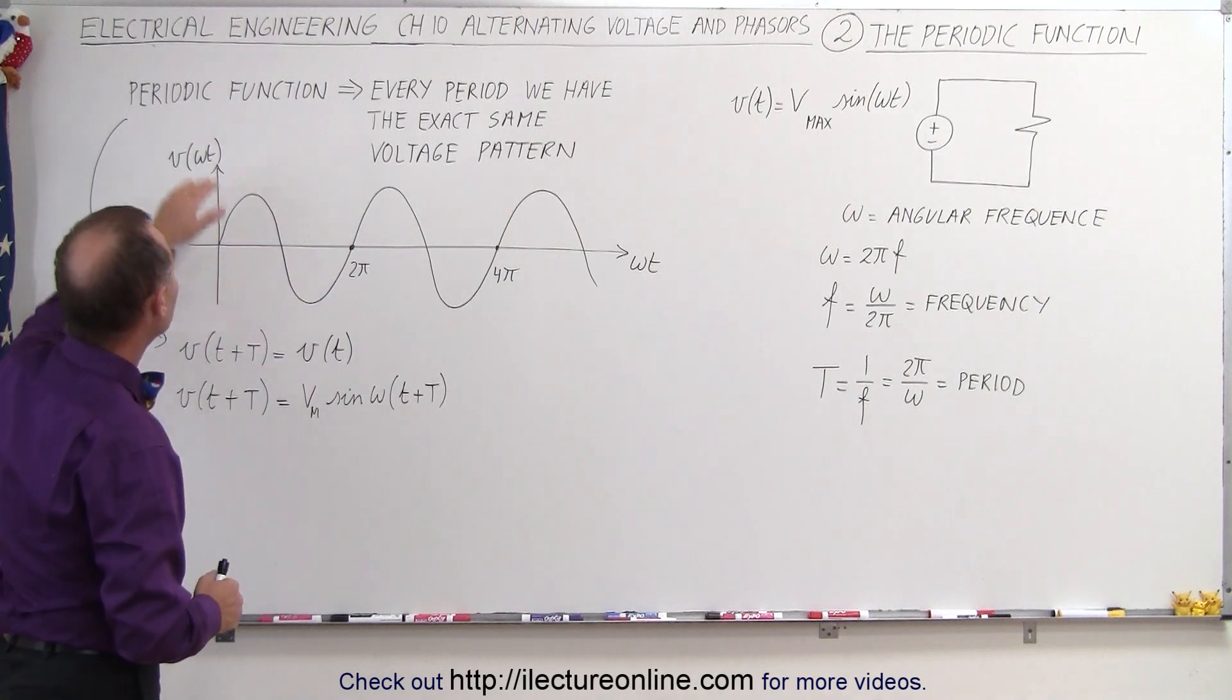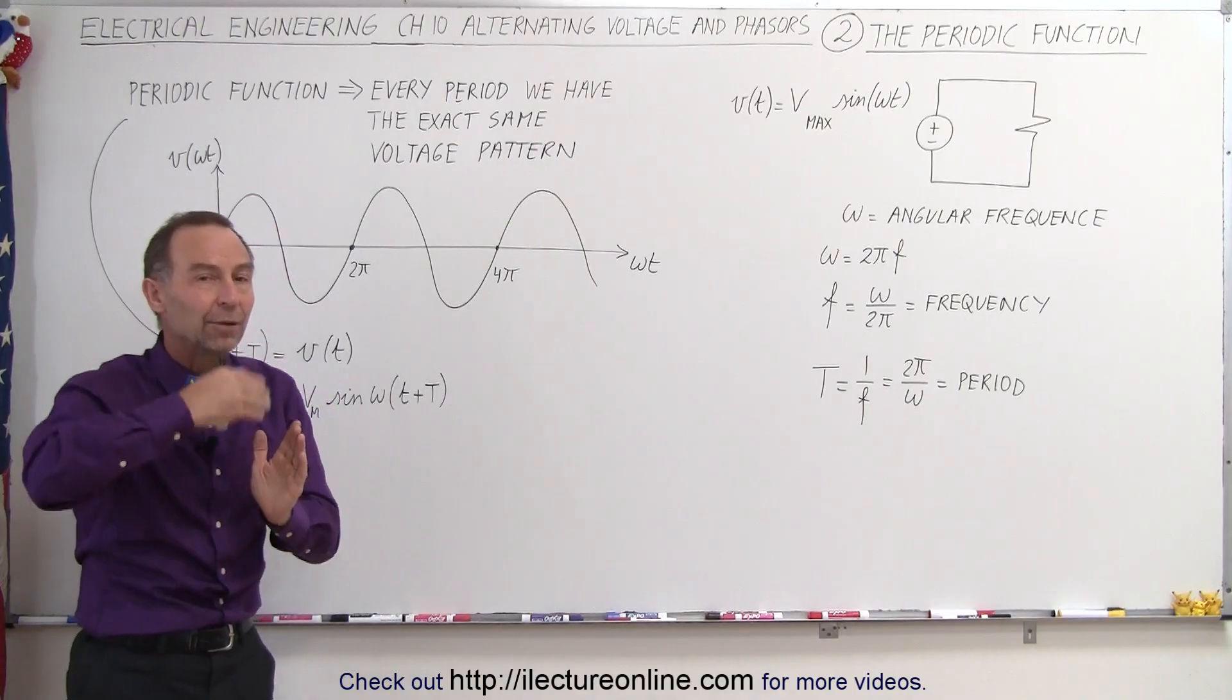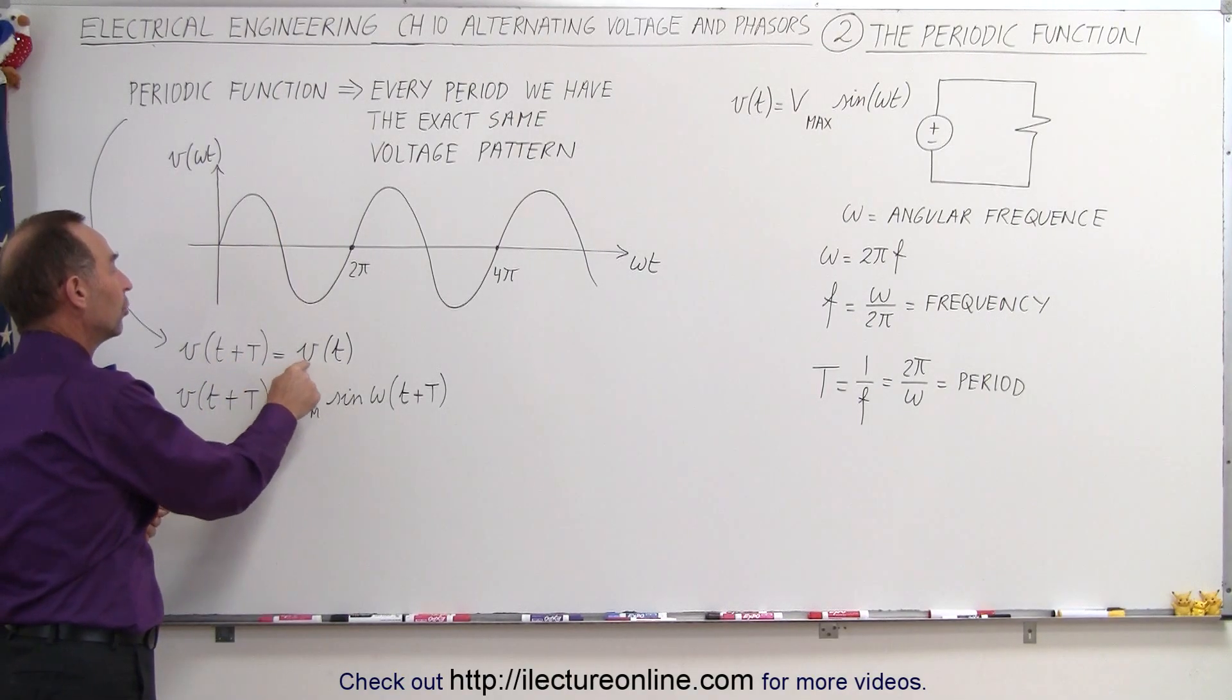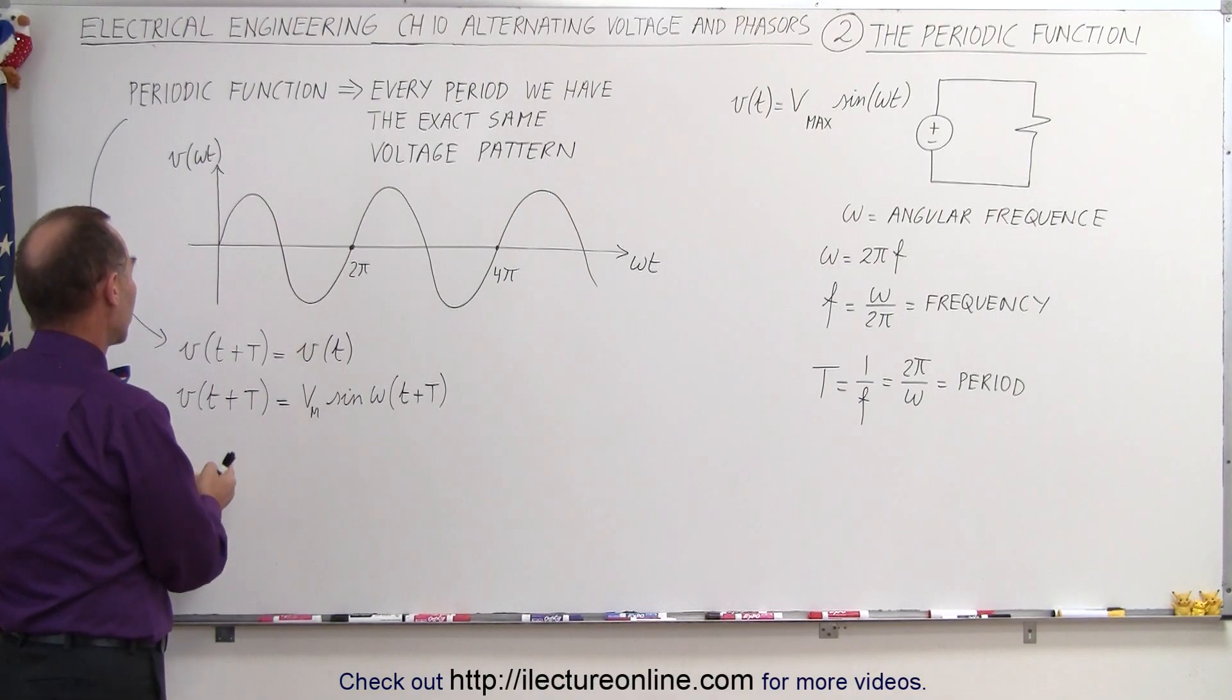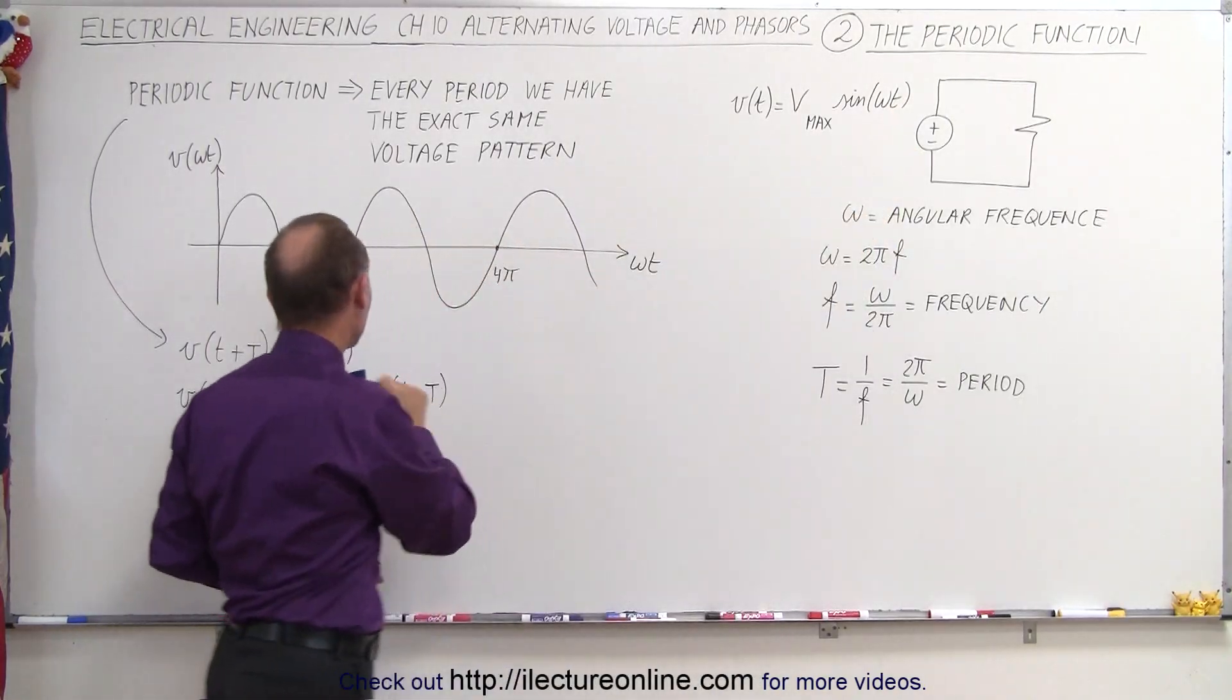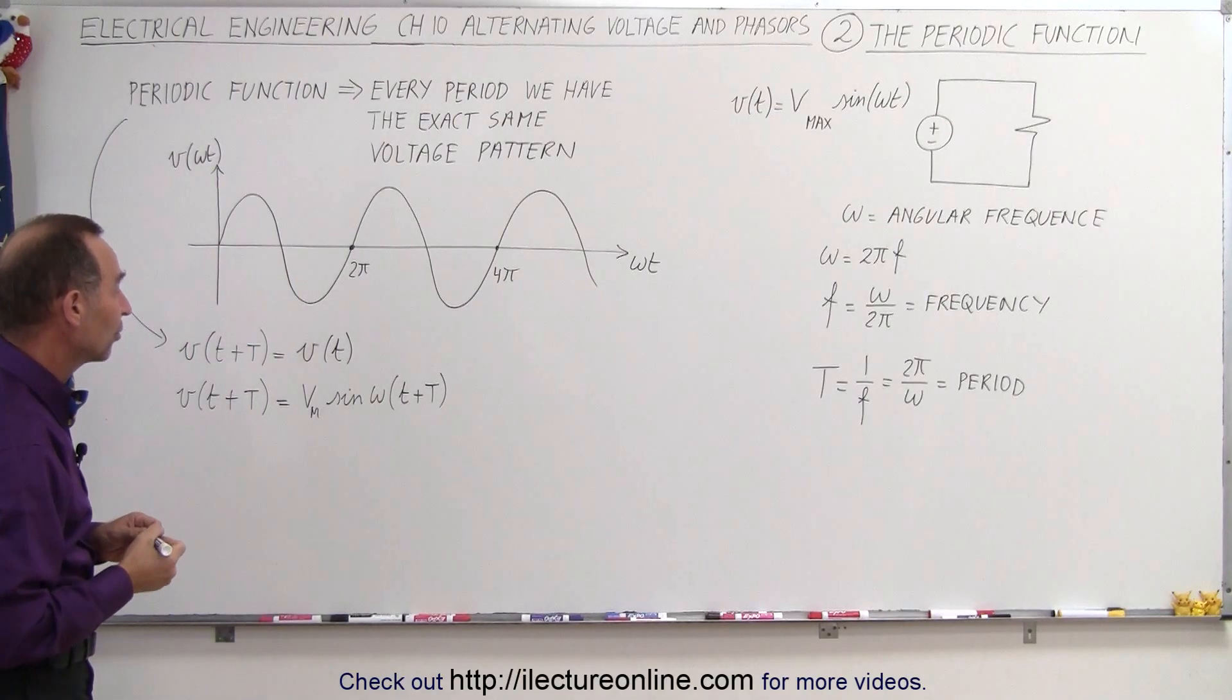So if we do have a periodic function, that means that every period we have the exact same voltage pattern and that it repeats itself over every period. Now that means that the voltage as a function of t plus the period should equal the voltage of the time. So what we're going to do now is we're going to replace t with t plus T in our function right here.